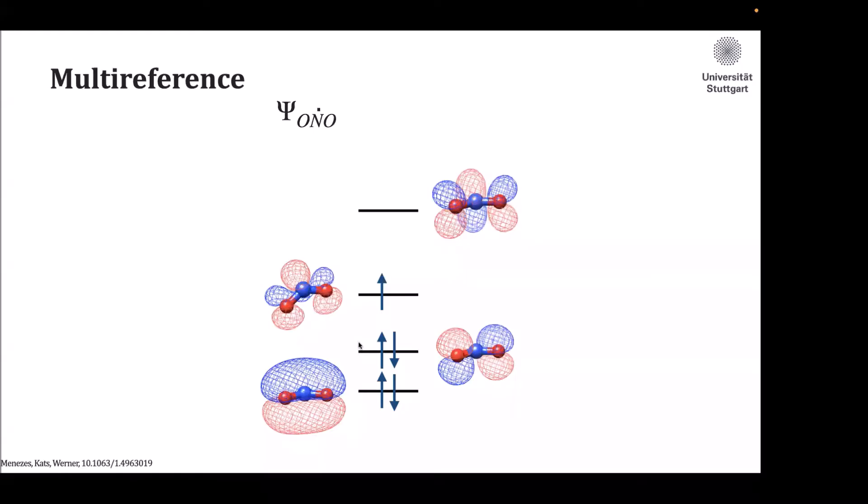The first is multi-reference. When quantum chemists calculate orbitals with energies, we assign electrons to each electronic configuration and generate a wave function. This is the Hartree-Fock wave function. However, some molecules cannot be described by a single electronic configuration. We excite electrons, generate other configurations, and obtain a more refined wave function.